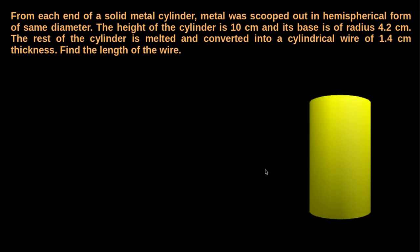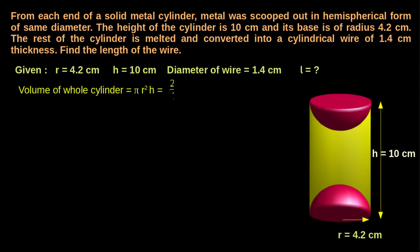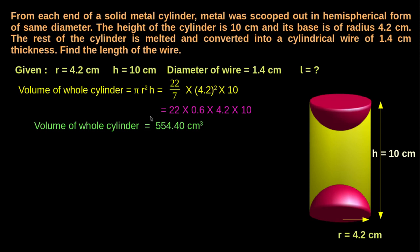Let us calculate the volume of the whole cylinder. The height of the cylinder is 10 cm and the radius of the base is 4.2 cm. Therefore, the volume of the cylinder is calculated using the formula V = πr²h, that is equal to 22/7 × 4.2² × 10. On simplification, we get the volume of the cylinder as 554.40 cm³.